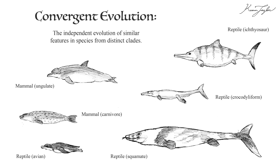Convergent evolution is a natural phenomenon by which different animals faced with similar contexts will often develop similar anatomical features. A famous example of this is the body plan that vertebrates consistently evolve when adapting from a terrestrial lifestyle to an aquatic environment.